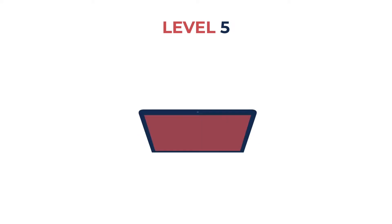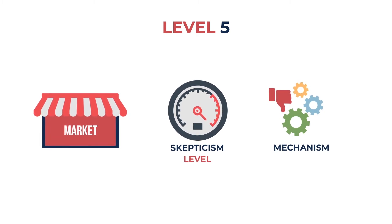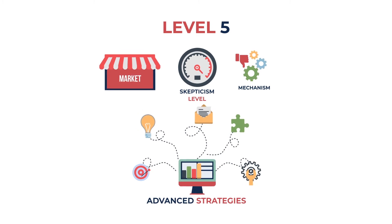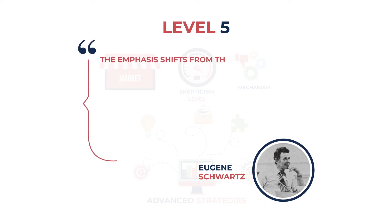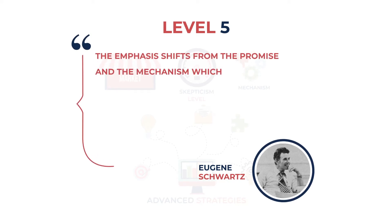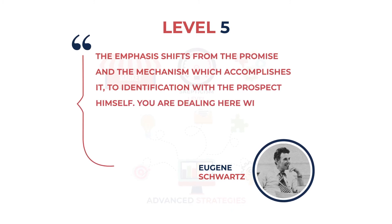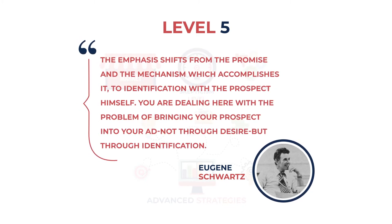The final level five: the market is at maximum skepticism. They no longer believe in mechanisms and something really advanced needs to be activated — this is when all the stops must come out. In the words of Eugene Schwartz: the emphasis shifts from the promise and the mechanism which accomplishes it to identification with the prospect himself. You are dealing here with the problem of bringing your prospect into your ad, not through desire, but through identification.